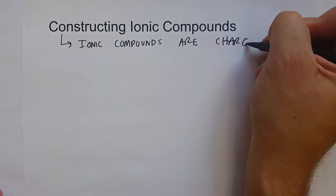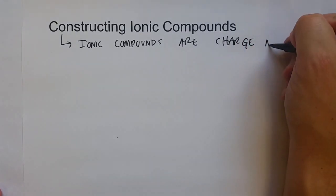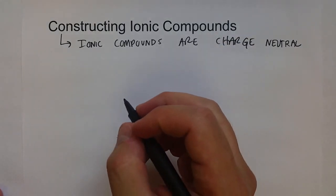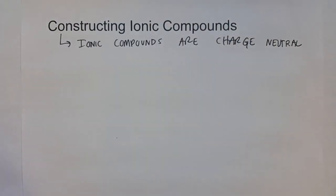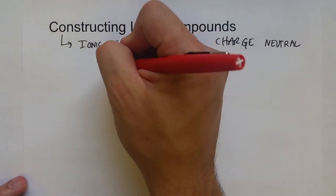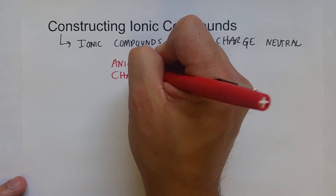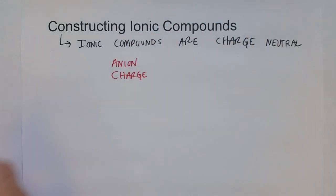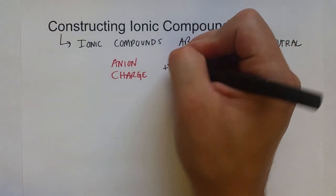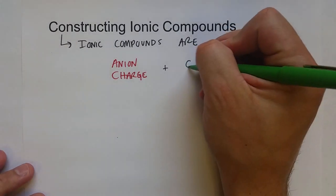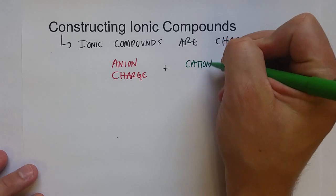Meaning that the sum of the charges from all the anions and cations have to equal zero. So the anion charge plus the cation charge must be equal to zero.